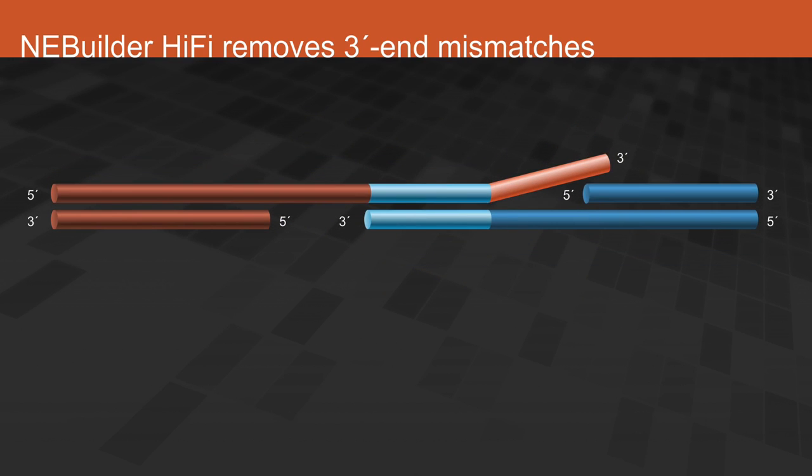NEBuilder HiFi is capable of efficiently removing 3' end mismatches, up to 10 base pairs from the 3' ends, so that they can be efficiently joined together.